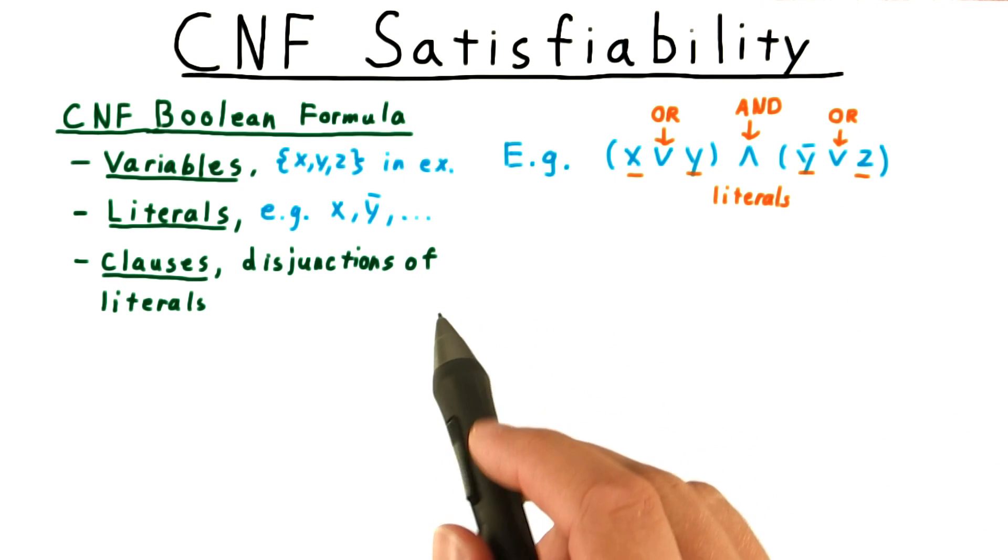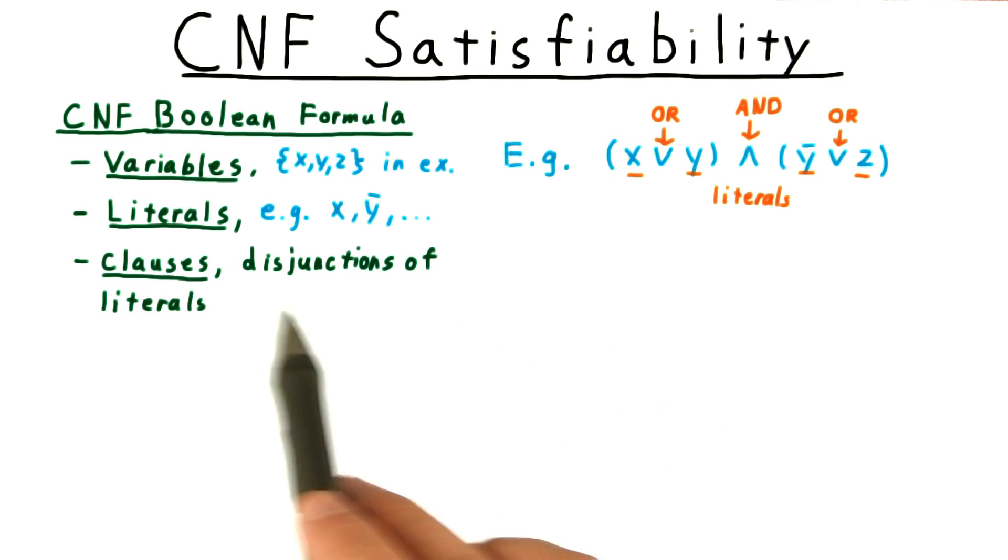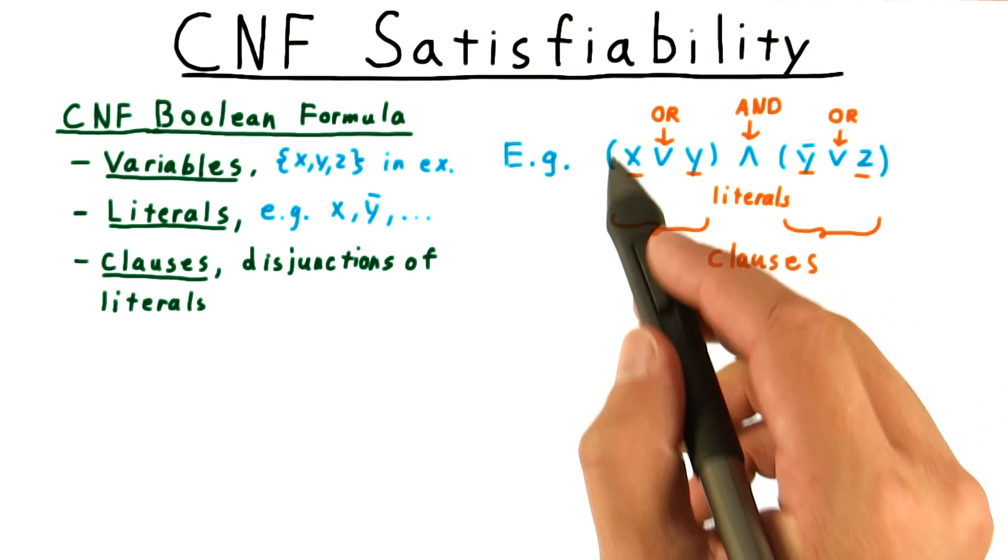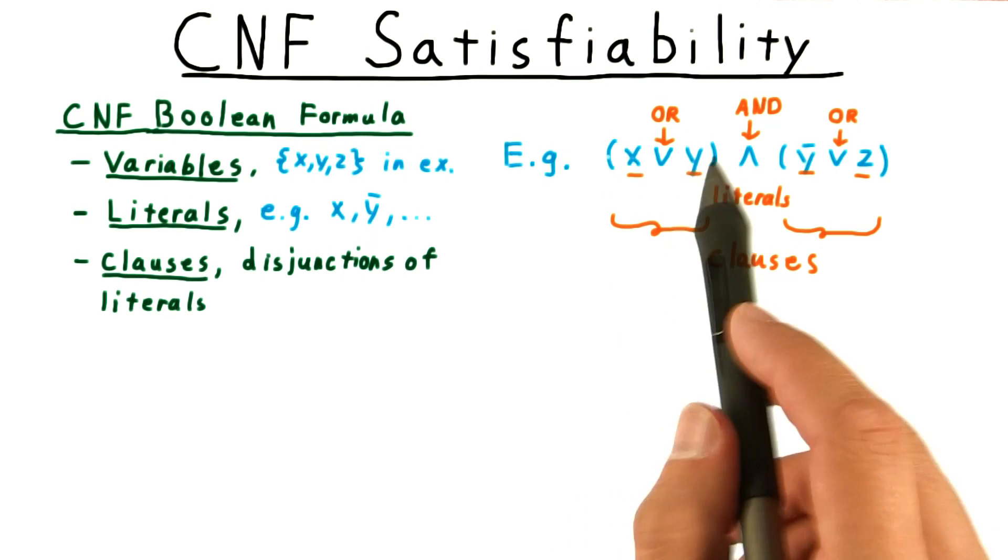At the next higher level, we have clauses, which are disjunctions over literals. You could also say logical ORs of literals. One clause is what lies in between a pair of parentheses.